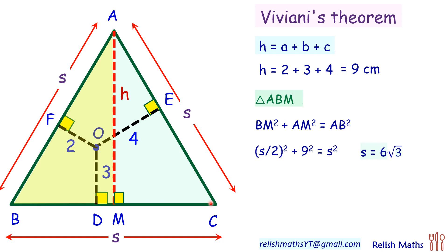So to get the area, we'll use the formula half of base into height. Here base is s, which is 6√3, and height is 9 centimeters we have calculated. Simplifying it, we'll get area of triangle as 27√3 centimeters squared, and that's our answer.